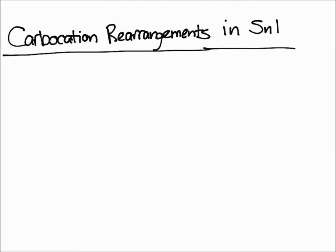In this video, I'm going to talk about carbocation rearrangements in SN1 reactions — more specifically, hydride and alkyl shifts. This concept is going to seem kind of weird at first. It's essentially hydrogens being able to move to create a more stable carbocation. It's just something you're going to have to remember. Let's start with an example.